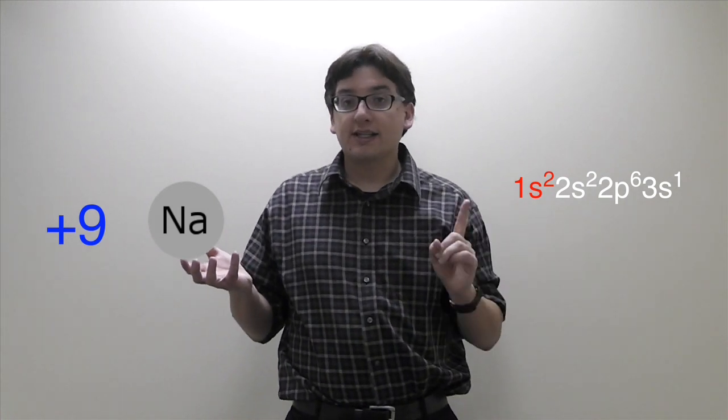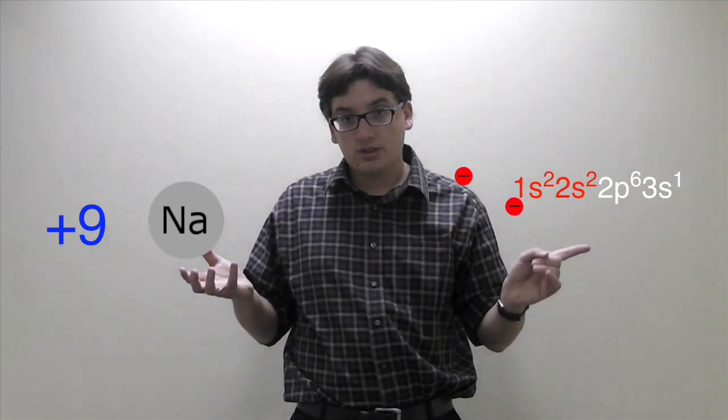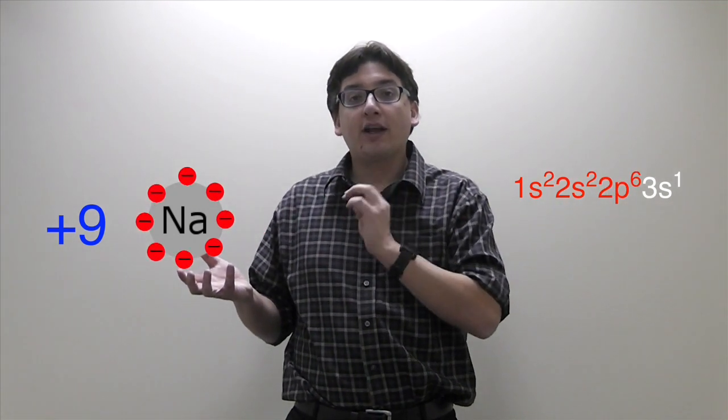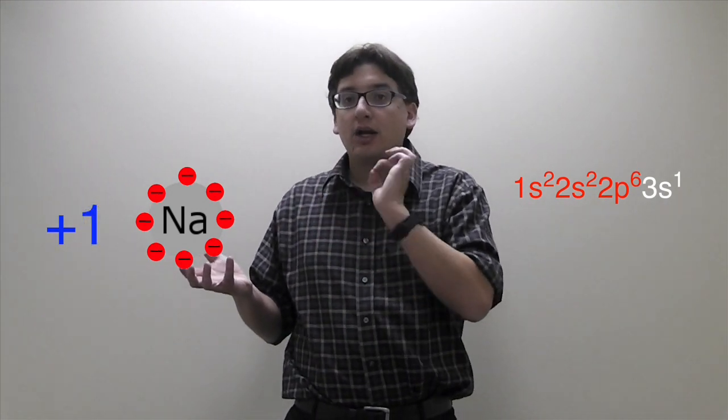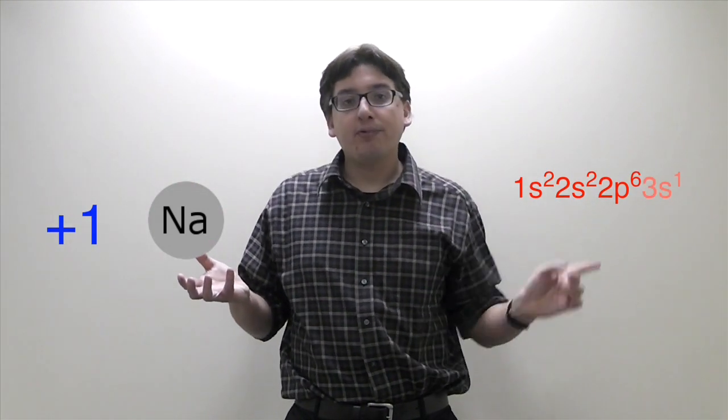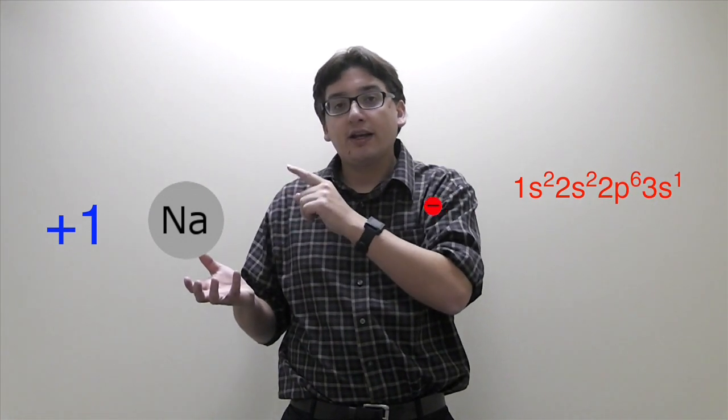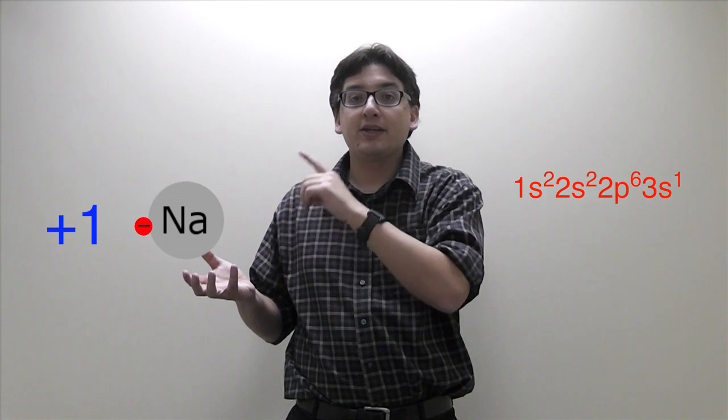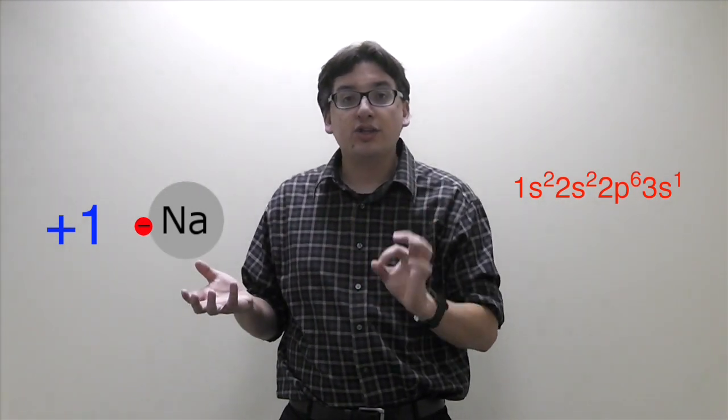If I go to the next level, the n equals 2 level, that means I'm going to add the 2s² and the 2p⁶ electrons on there. Now they've shielded another 8 more positive charge from reaching outside, and so all that's left is another +1 charge. So when I put this other electron on, this electron is only being pulled in by +1 charge because the other charges are all being shielded by the core electrons.